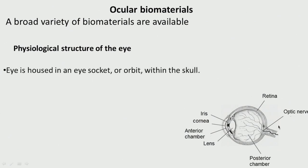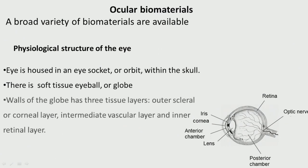The eye is housed in a socket or orbit within the skull. There is a soft tissue eyeball or globe. The walls of the globe have three layers: the outer scleral or corneal layer, the intermediate vascular layer, and the inner retinal layer — you can see these three layers here.